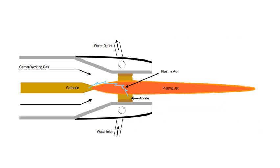Looking at the diagram, we can see the plasma arc and the plasma jet accelerating through the anode. It then hits the material and the powder particles fuse to the material surface.